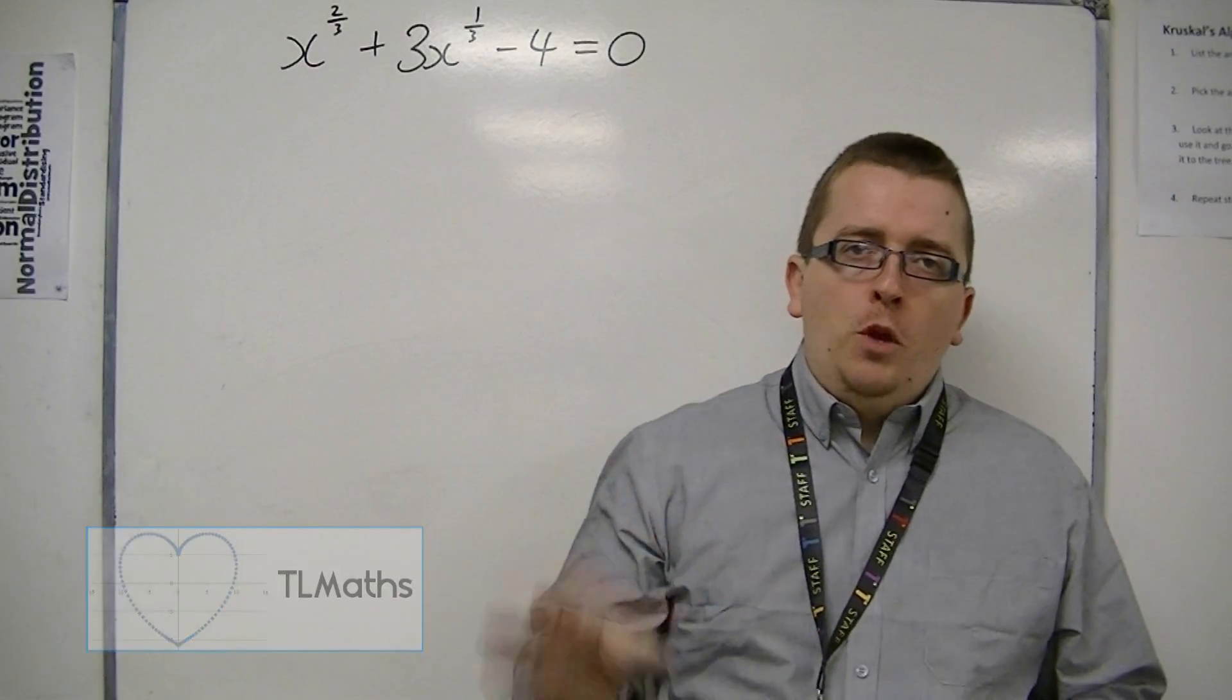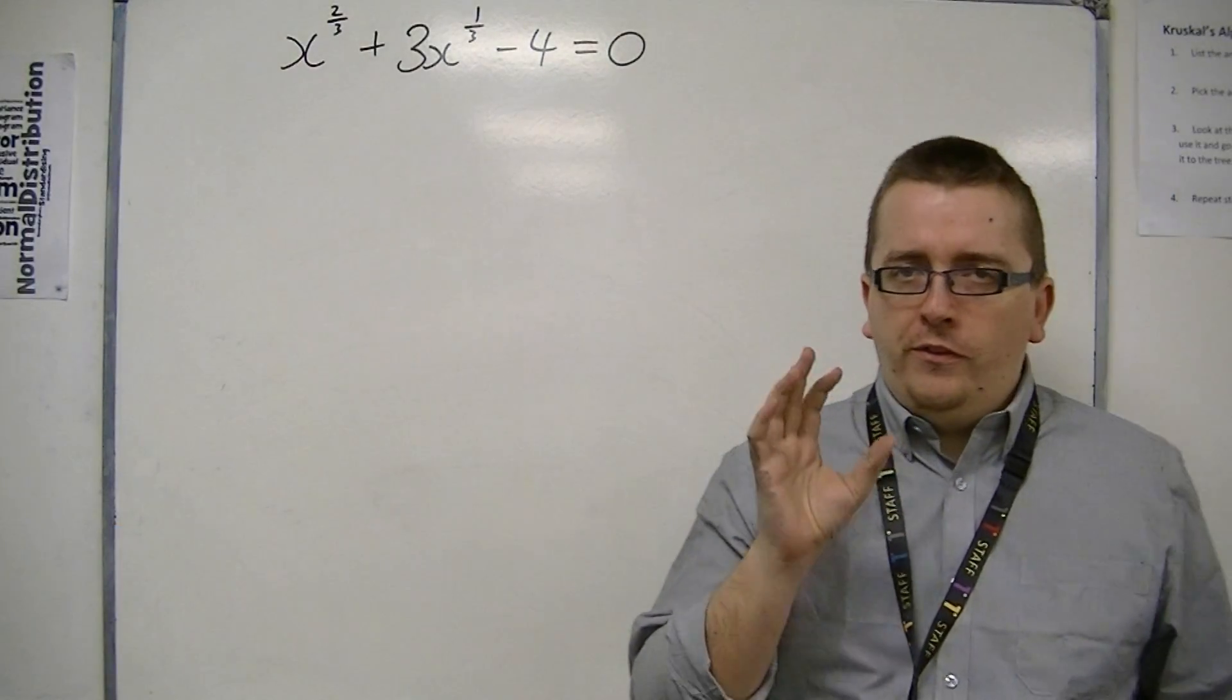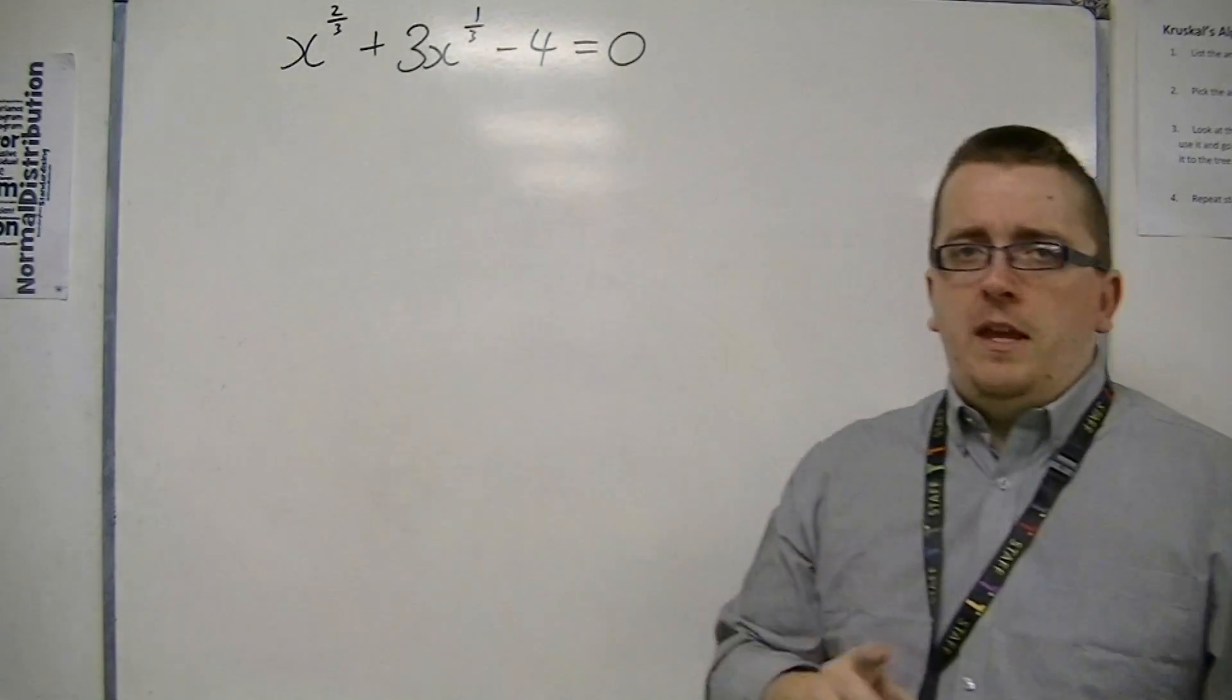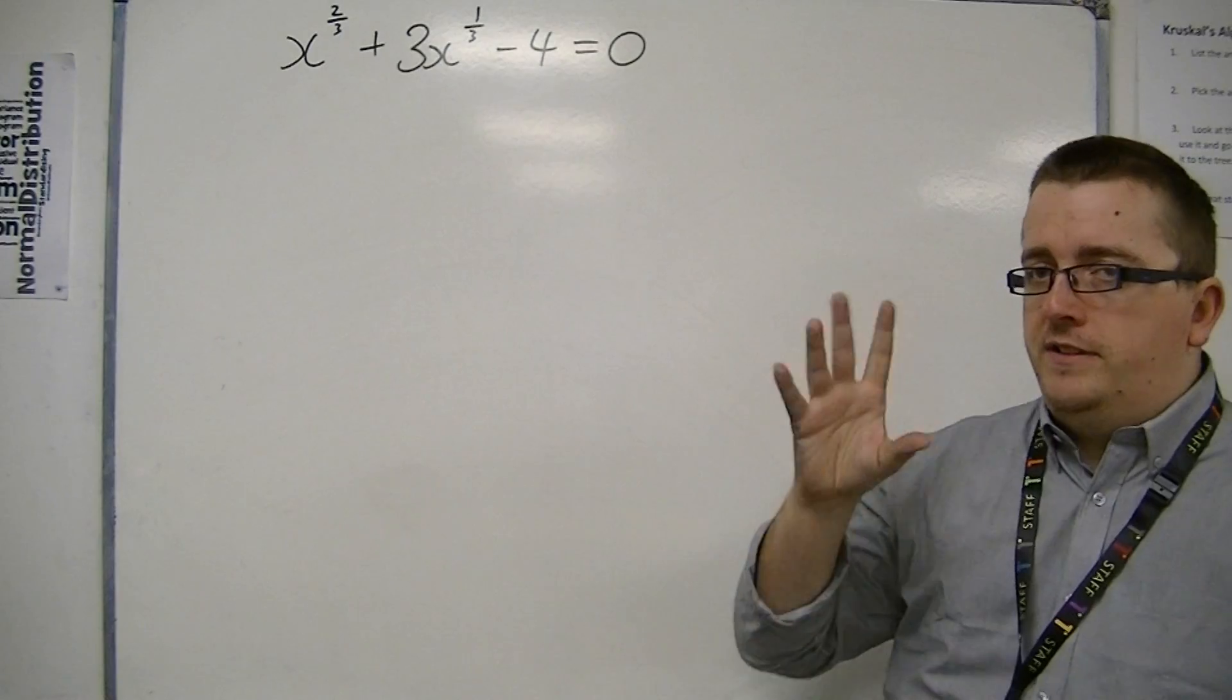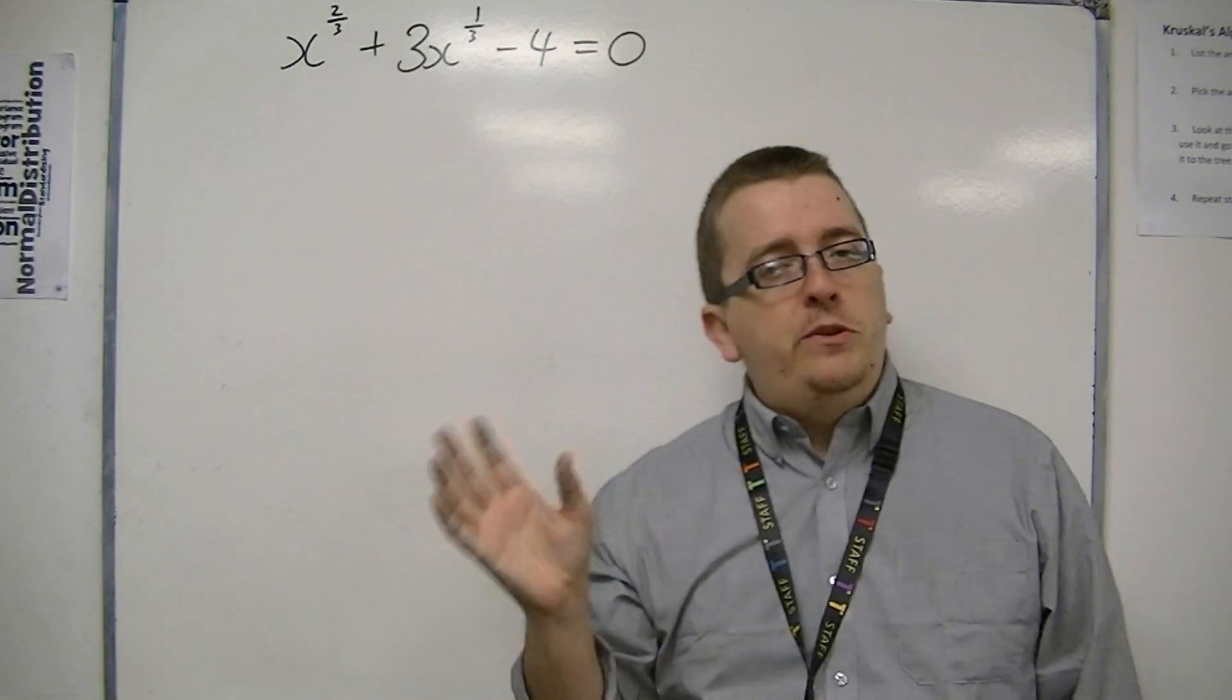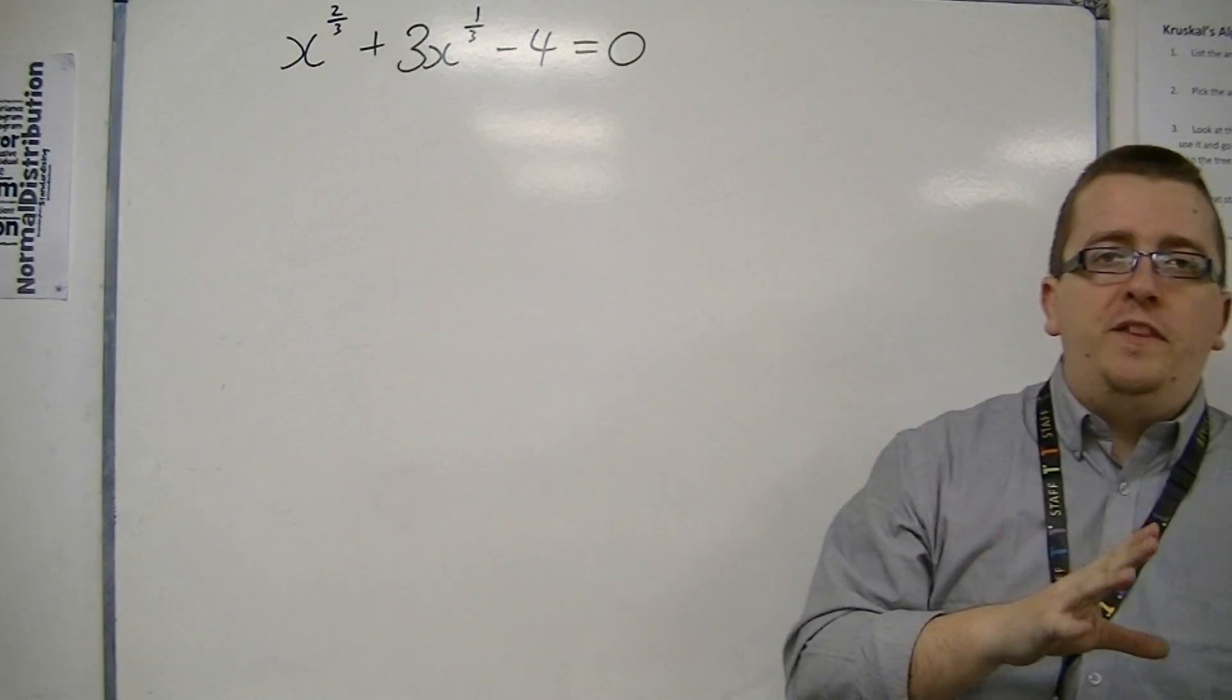In this fourth example, we have another hidden quadratic that looks subtly different to the previous three. Not subtly different, but it does look different, because now we don't have 2 to the x, or 3 to the x, or 5 to the x.